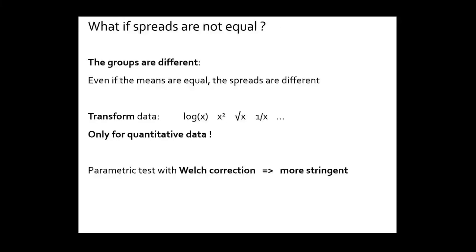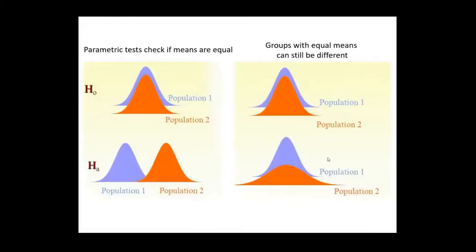What if the F test tells you that the spreads are not equal? Well, from a statistical viewpoint, you should basically conclude that the two groups are different. You don't know if the means are the same, but at least you already know that the groups are different. They have different spreads.